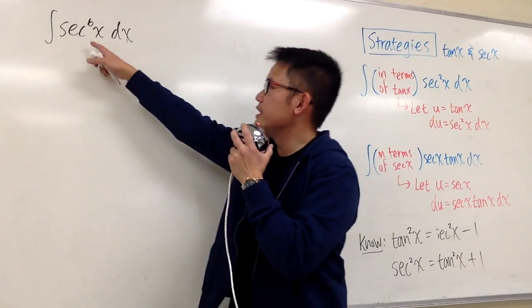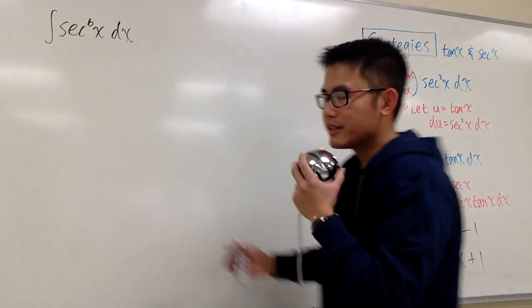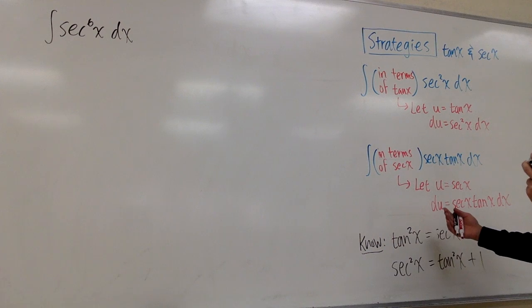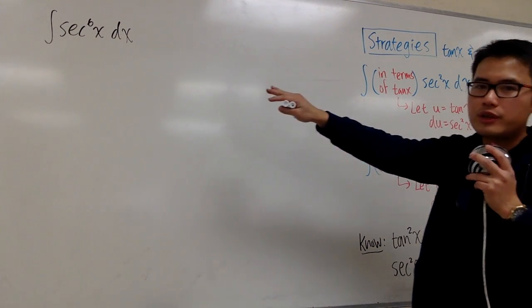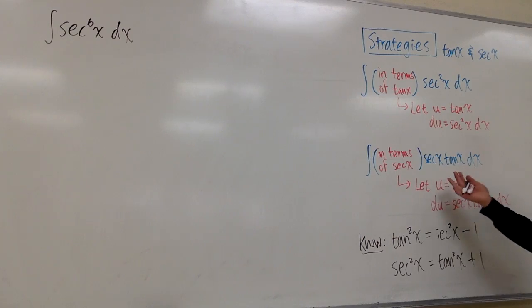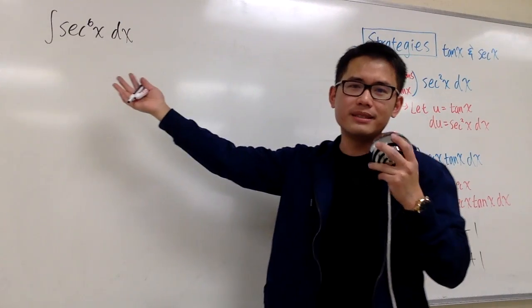We are going to integrate secant to the 6th power x, and once again, here are the strategies. As you can see, the first one will be suitable in our situation because I don't see tangent x in the integral in the first place.